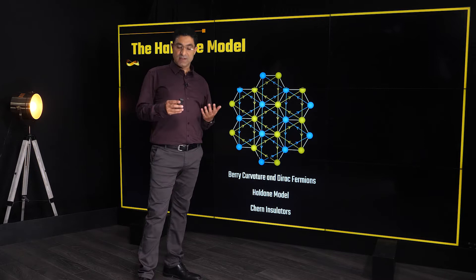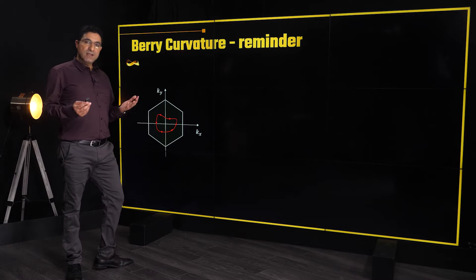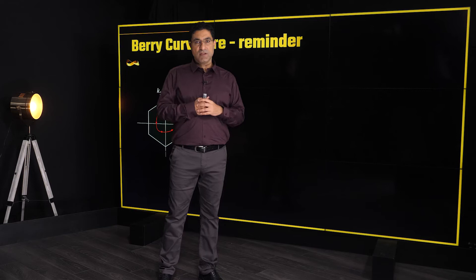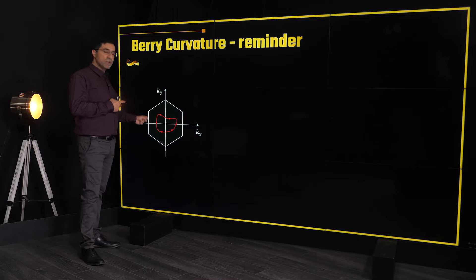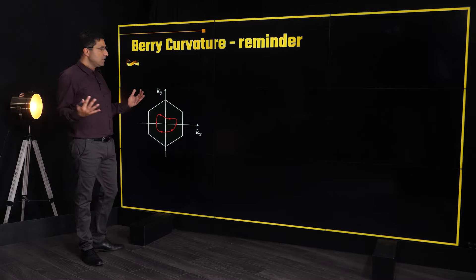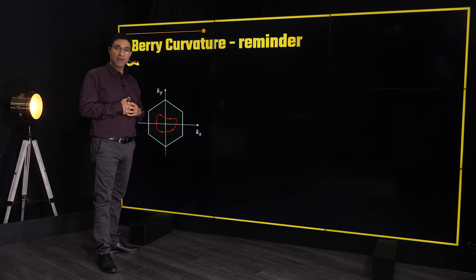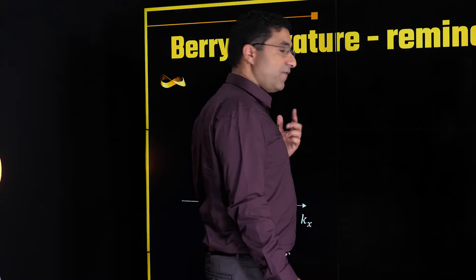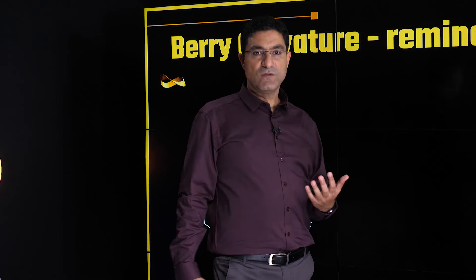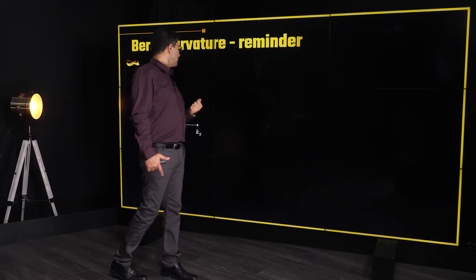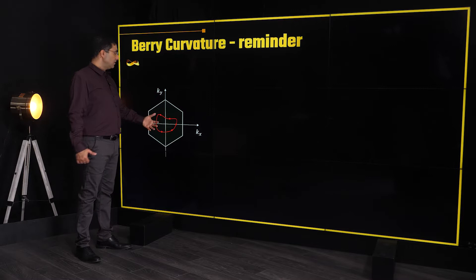Let me start with a brief reminder of what Berry phase and Berry curvature are. Berry told us that in addition to the dynamic phase that any wave function has in quantum mechanics, if we perform a trajectory in parameter space — any general parameter space — the wave function can acquire an additional geometrical phase factor. This is generic; we can choose any parameter space. But it becomes extremely useful when we think of a specific parameter space in solid state, which is the space of momenta — the Brillouin zone.